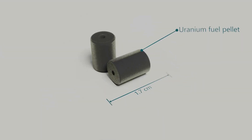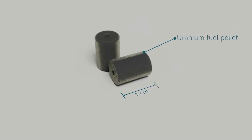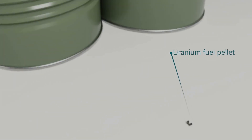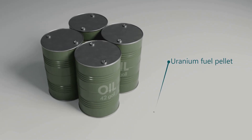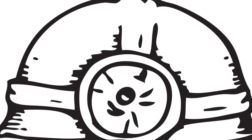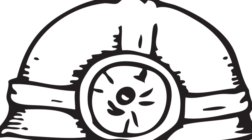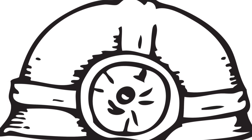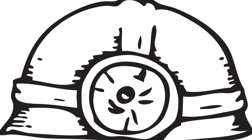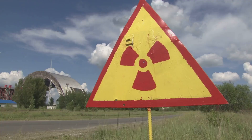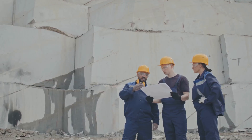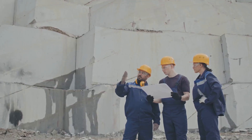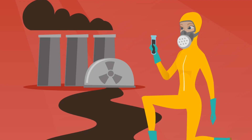Once uranium-rich minerals are brought to the surface, the next step is to separate them from surrounding materials through a detailed refining process — impurities are removed and the uranium is enriched, transforming it into a form suitable for nuclear fuel or other applications. But if uranium is so dangerous, how can it be mined without putting workers in harm's way? The answer lies in safety protocols, which when properly followed can significantly reduce the risks.